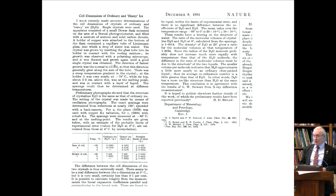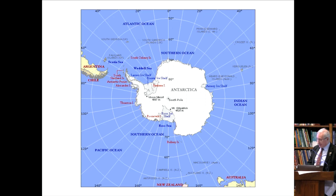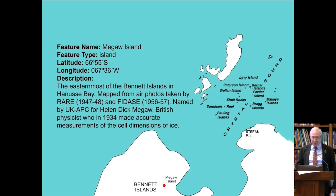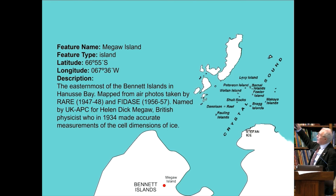Here is Antarctica, and if we look just there, there's a whole range of interesting islands that have been named after scientists. You'll notice Bragg Islands, Pauling Islands, Bernal Islands, and down on the bottom left there are McGaw Islands. It's very difficult to find on the modern map, but apparently they're still there.